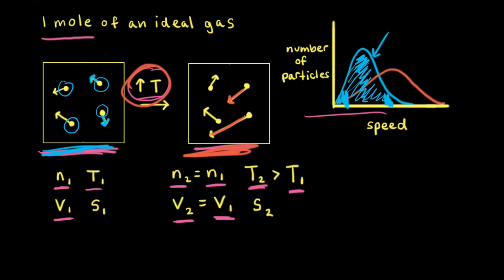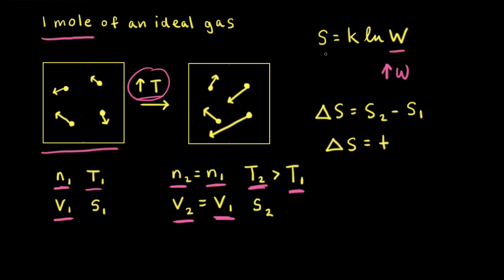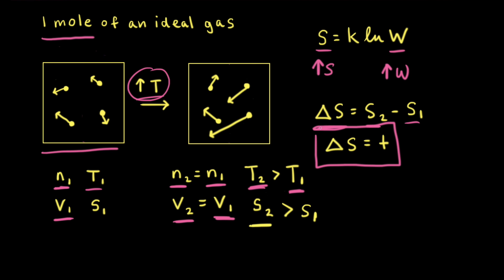Increasing the temperature means that on average the particles are moving faster, so the length of the arrows in the particulate diagram is longer. It also means there are a greater range of speeds available to the particles. If there's a greater range of speeds or velocities, that means a greater range of kinetic energies, which means there are more possible microstates available to the system. Therefore, increasing the temperature causes an increase in the number of possible microstates, and an increase in microstates means an increase in entropy. Therefore, the final entropy S2 is greater than the initial entropy S1, and the change in entropy is positive.